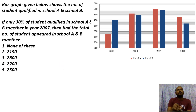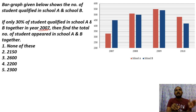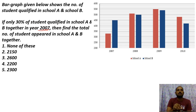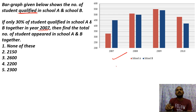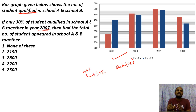Next question: If only 30% of the students who qualified from School A and School B together in 2007, find the total number of students who appeared in A and B together. So this is the third question, and using the third chart — if 30% is the qualifying percentage, then 100% is the total appeared.